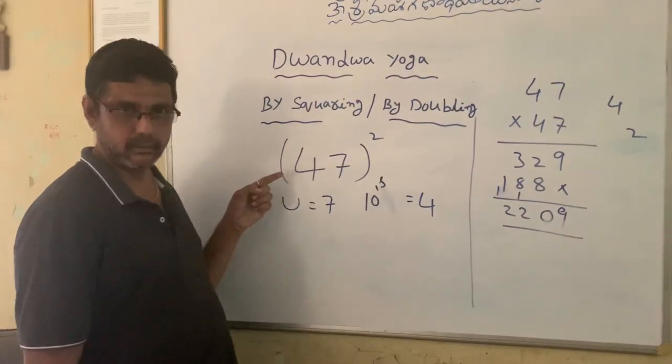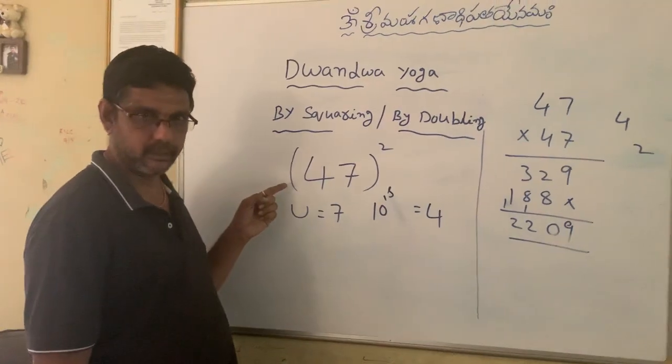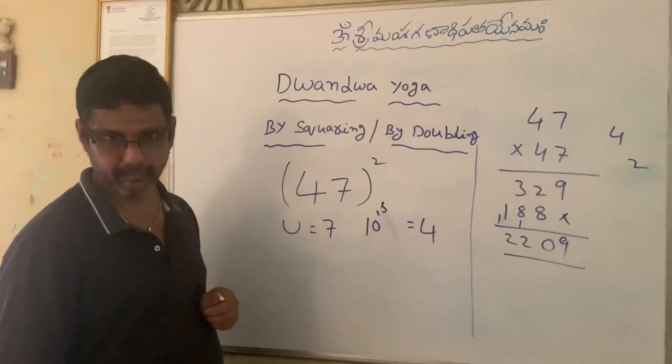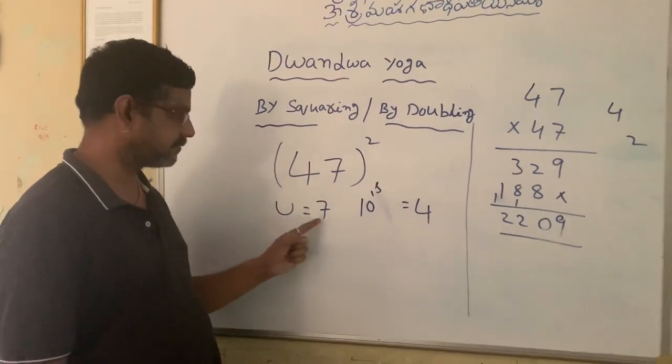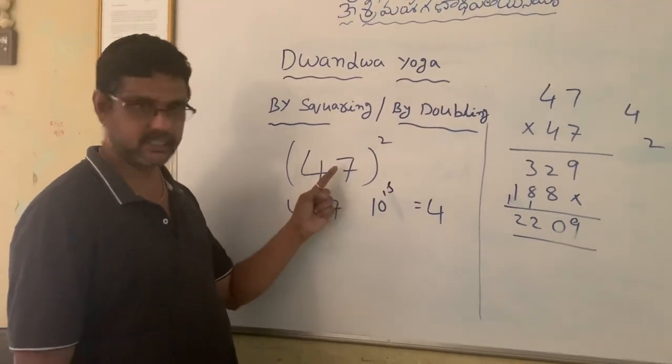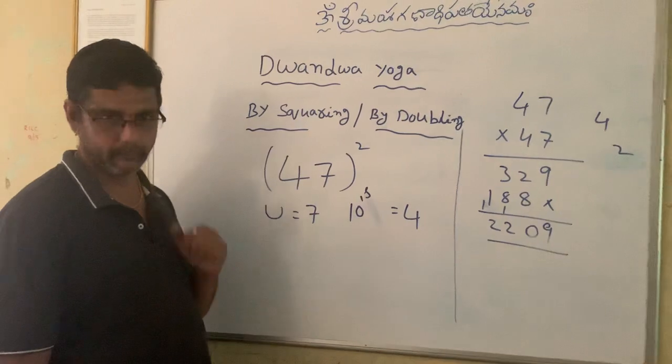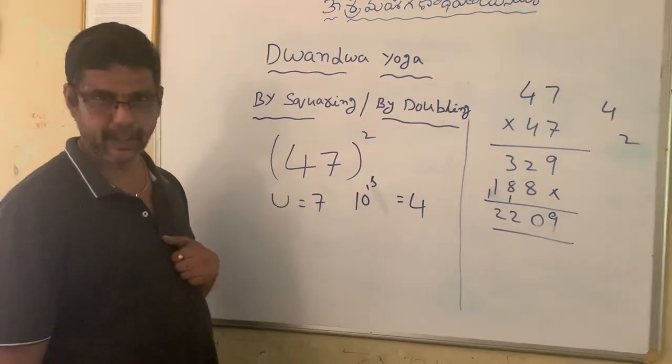For the same number I am going to square it by using Dvandva Yoga. In 47, units digit is 7 and tens digit is 4. Now step 1.